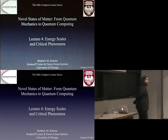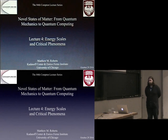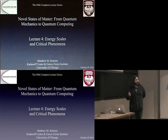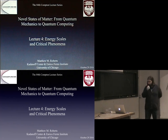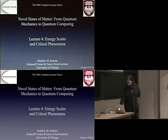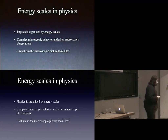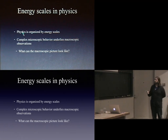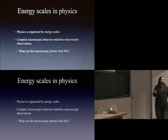All right, I think it's about time to begin. So as I said in the first lecture, this lecture is going to be about energy scales and understanding how looking at different energy scales in physics helps us characterize the system. And in particular, when we ask about critical phenomena — which just sounds like jargon now, but I'll explain precisely what it is. Something that's often said when you go to public science talks — maybe you've heard this — is that physics is organized by energy scales.